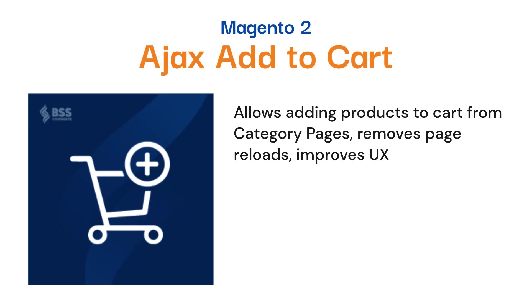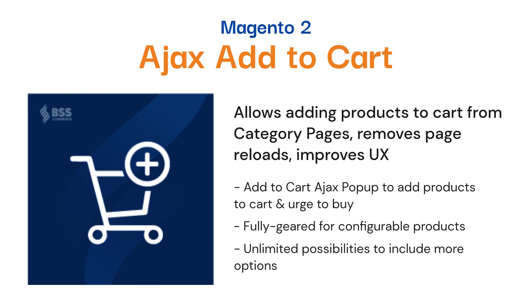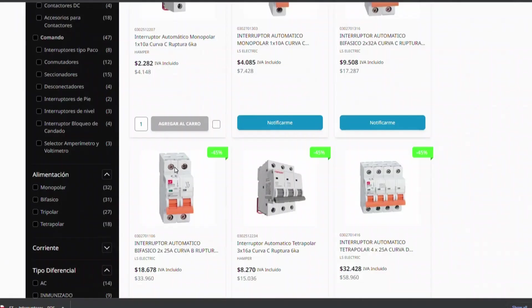Next is Magento 2 Ajax Add to Cart. It allows adding products to cart from category pages, removes page reloads, and cuts down the loading time. It enables an Add to Cart Ajax pop-up to add products to cart and urge to buy. Fully geared for configurable products and unlimited possibilities to include more options.